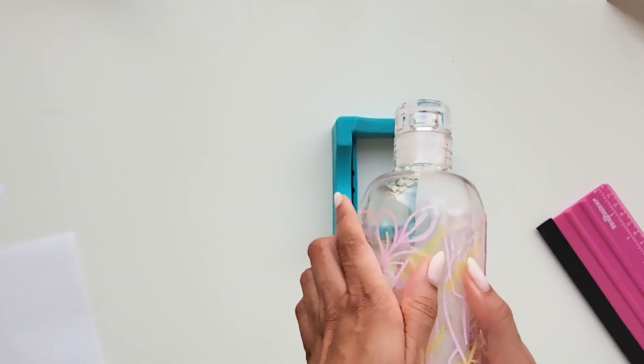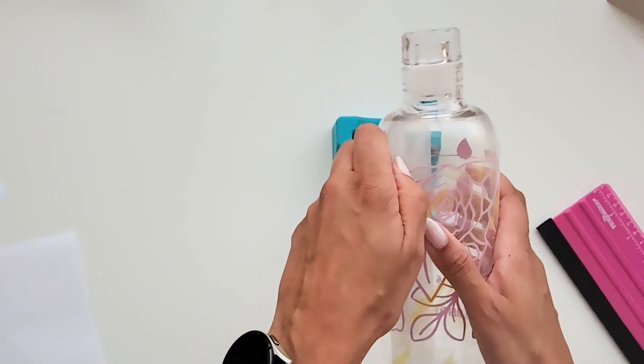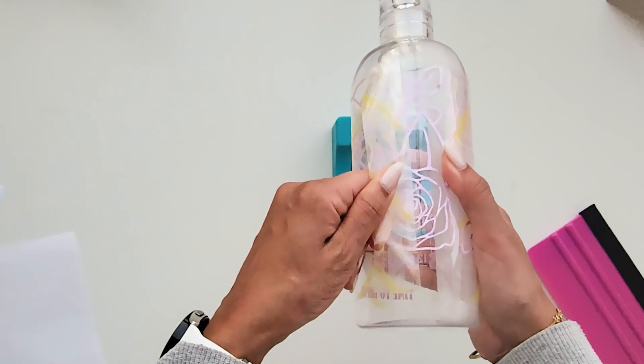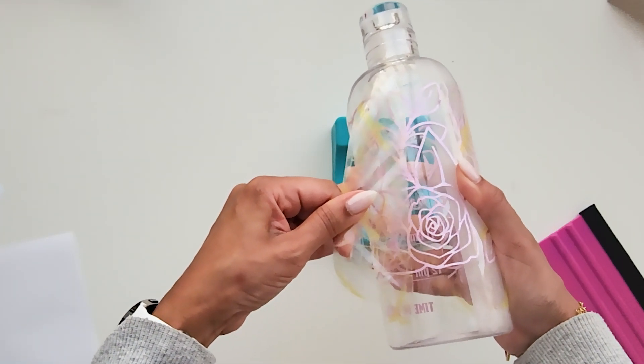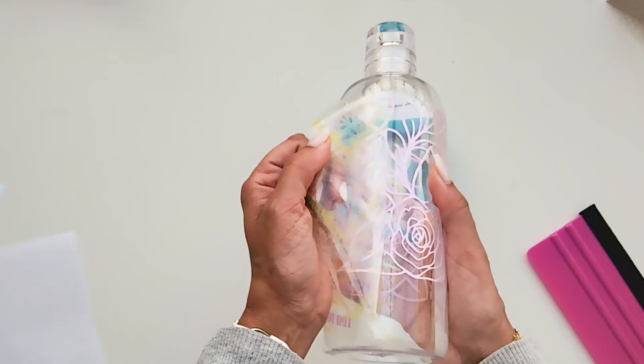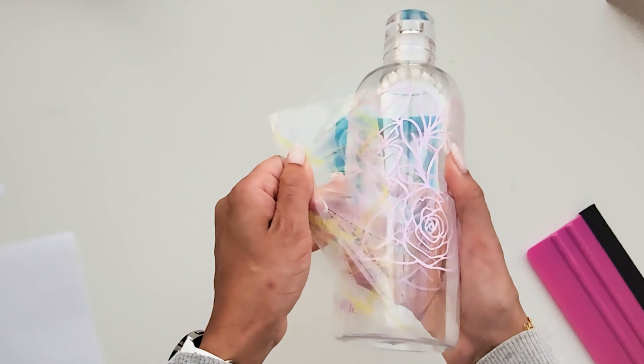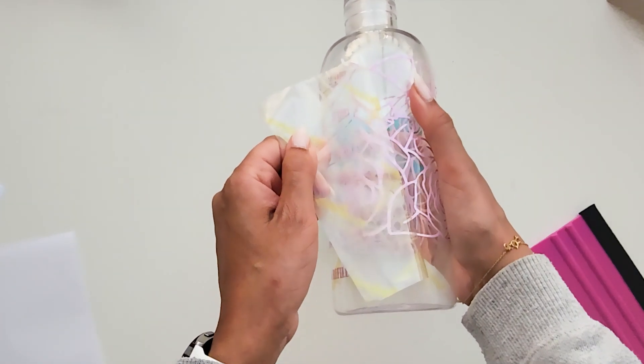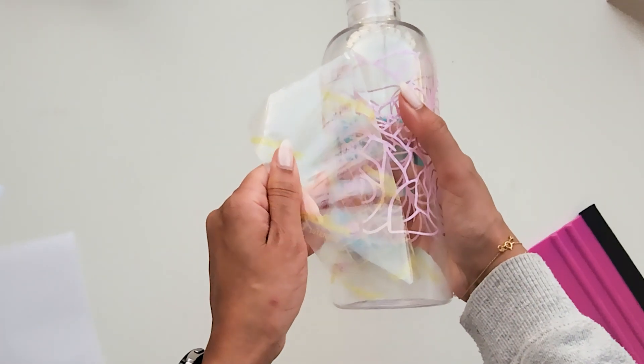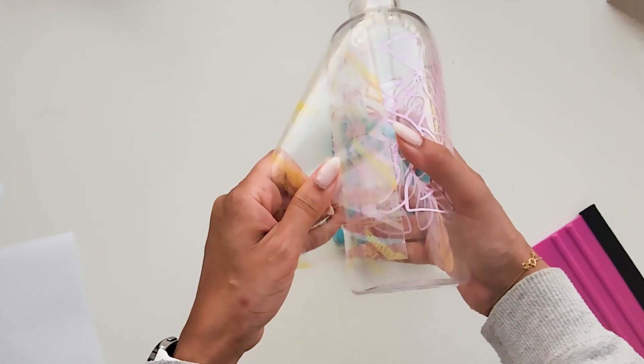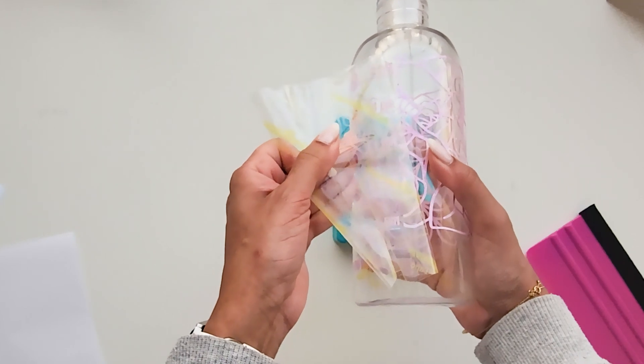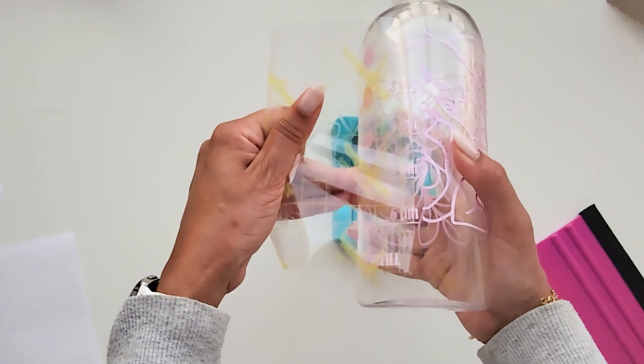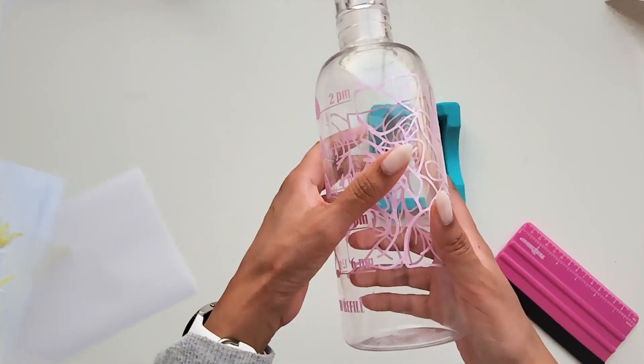All right, scrape, scrape, scrape. Make sure everything is adhered properly, and then peel back. Slowly peel back because the surface area of your design, if it's a line design like this one, just pull back easy so it does not lift off.